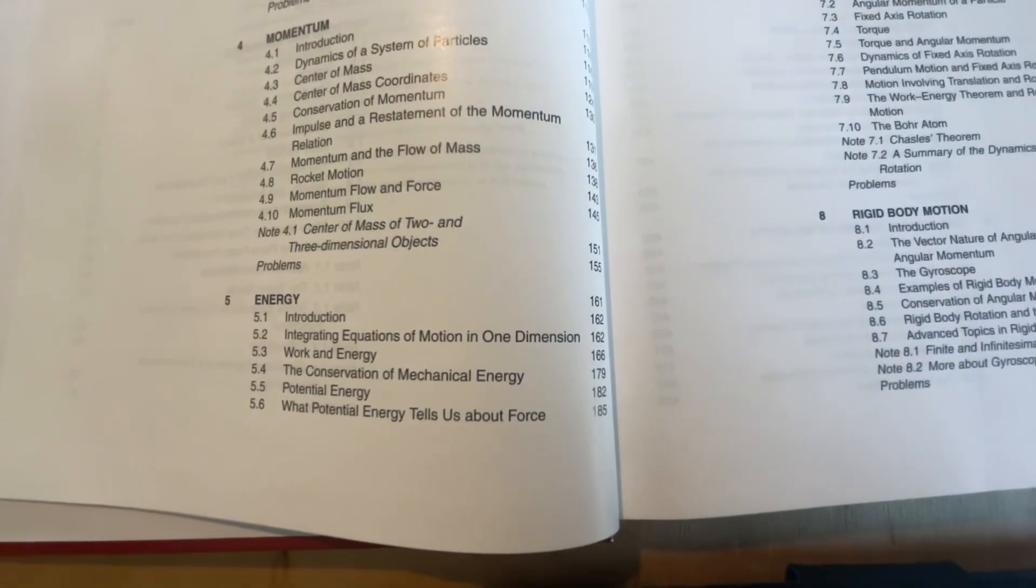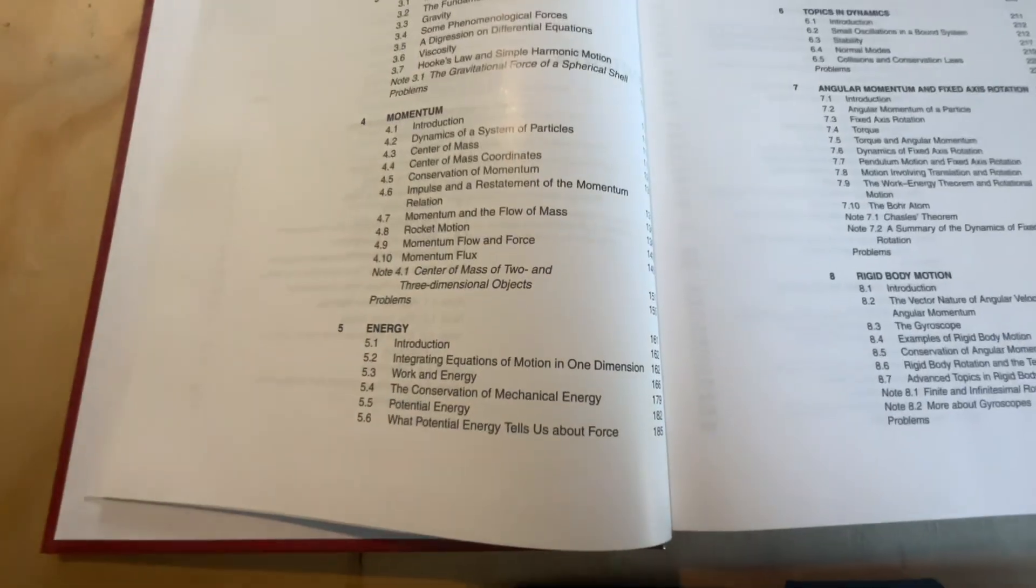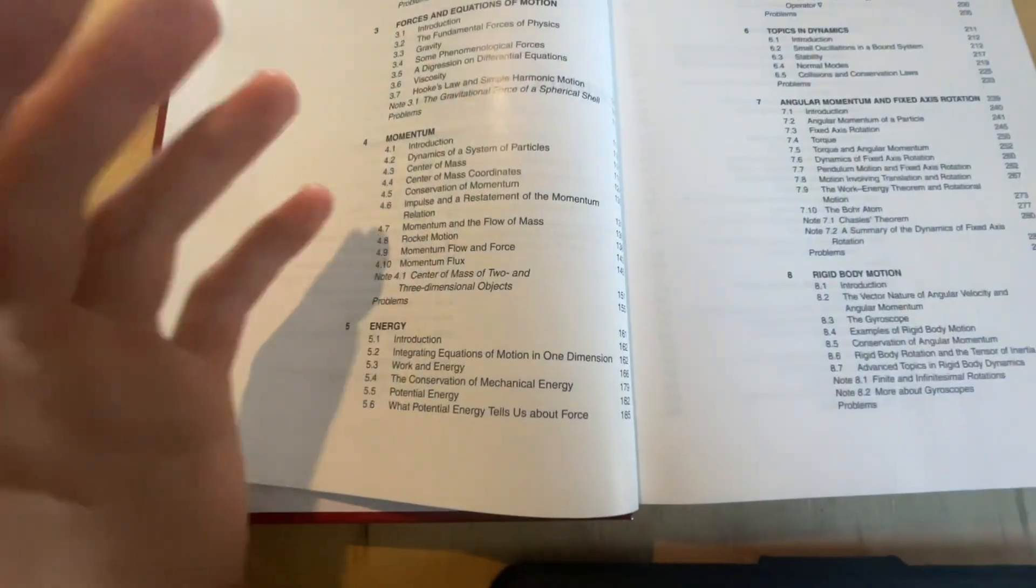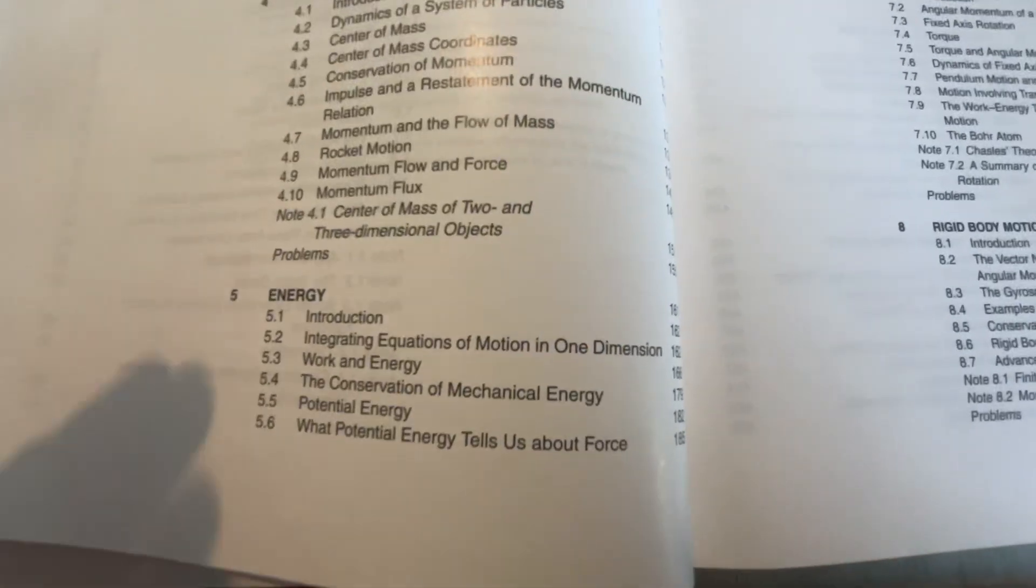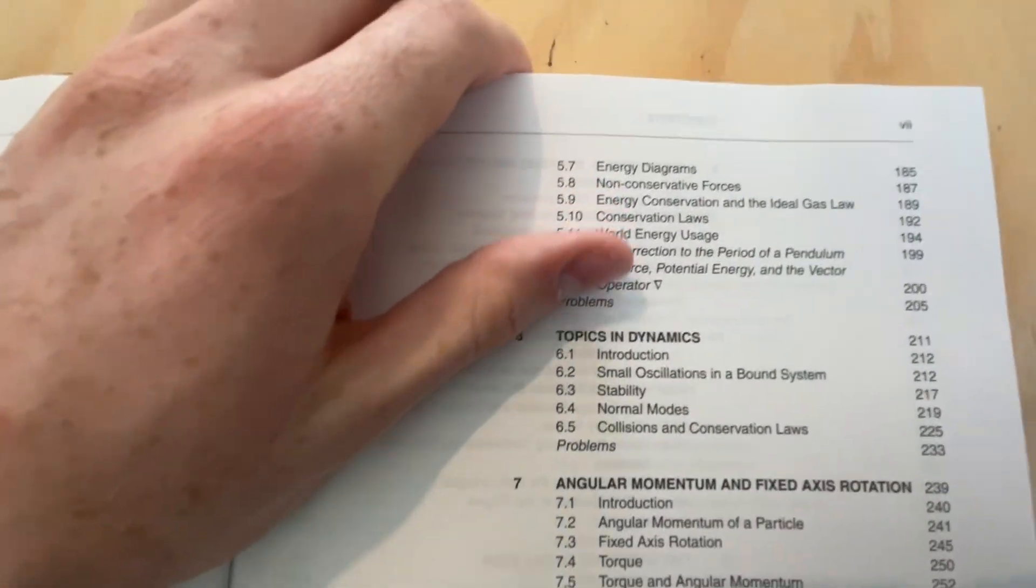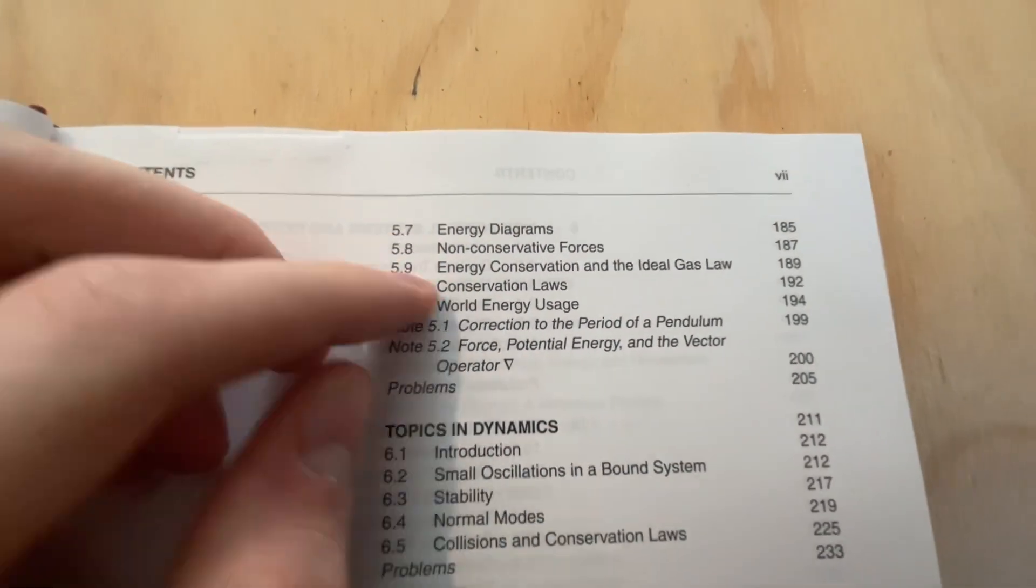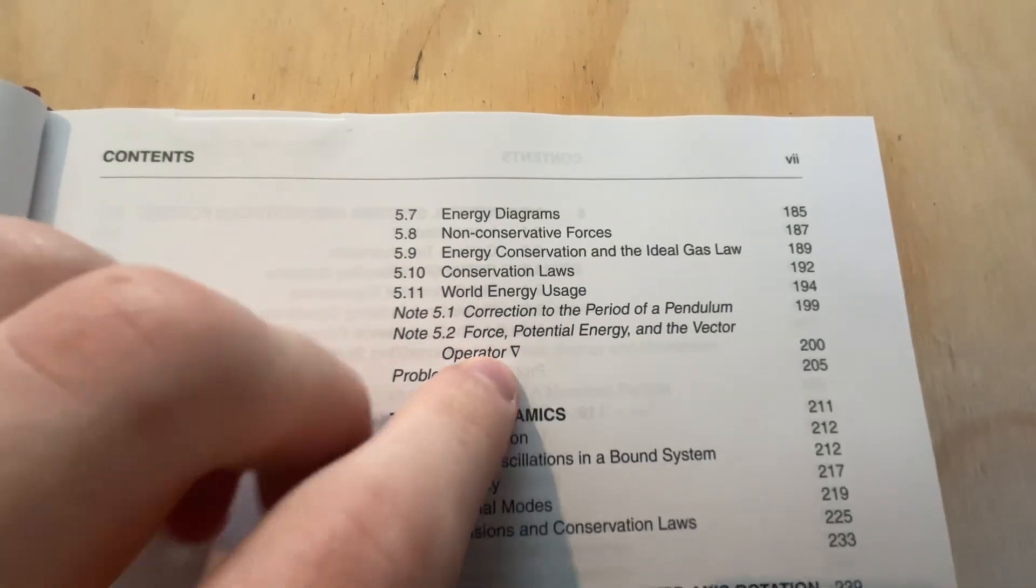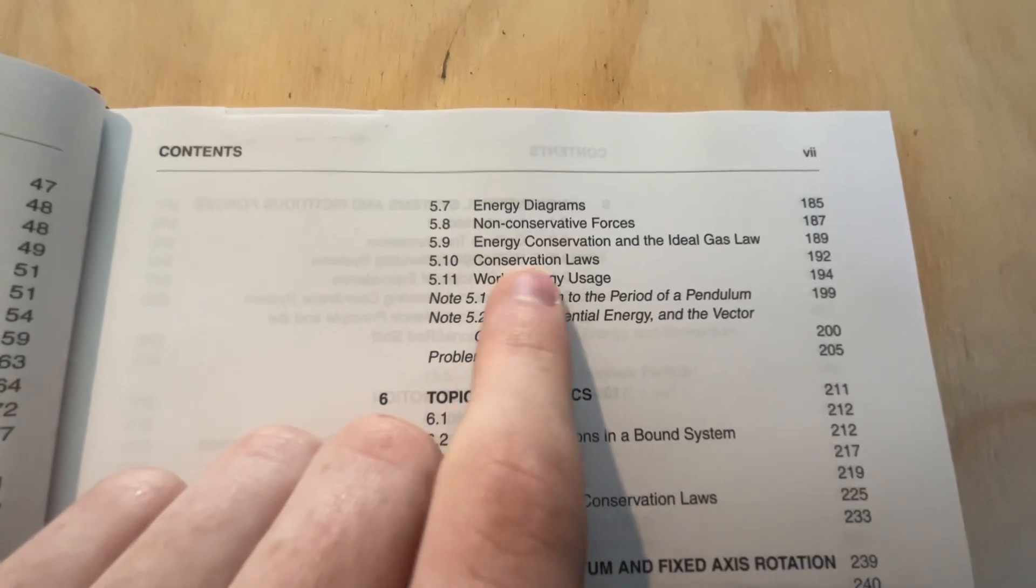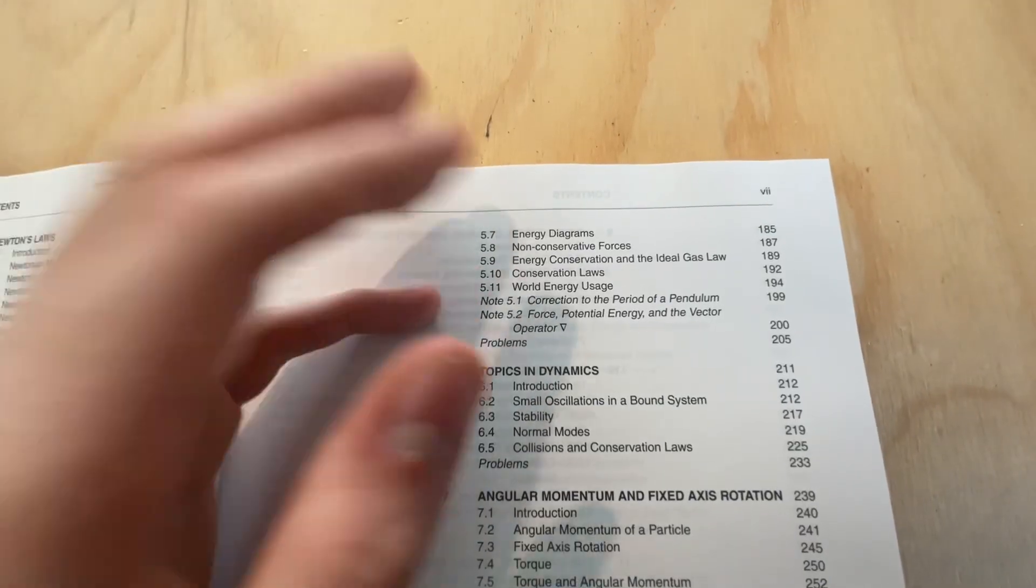Next up we've got energy. Now this is actually, again, a little bit more advanced. Not quite on the level of Taylor's book, but definitely edging towards it. It's got the normal stuff like conservation of energy and all about potential energies, but it's a lot more mathematically sophisticated than a typical introduction book. Of course it even talks about the integral solutions as well. Over here we've got even more stuff. It talks about non-conservative forces. It even talks about some more vector calculus here. There's an interesting world energy usage section here, which is quite cool. It even talks about ideal gases, which is cool. So yeah, a lot more stuff here than you typically get in an introduction course.